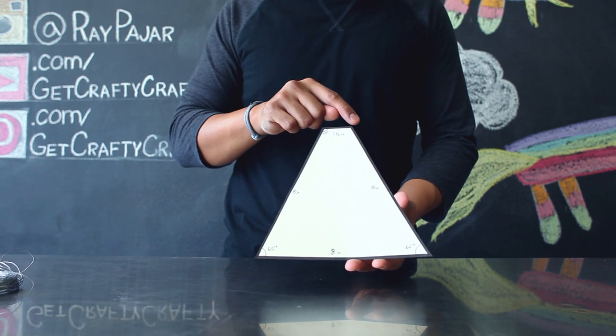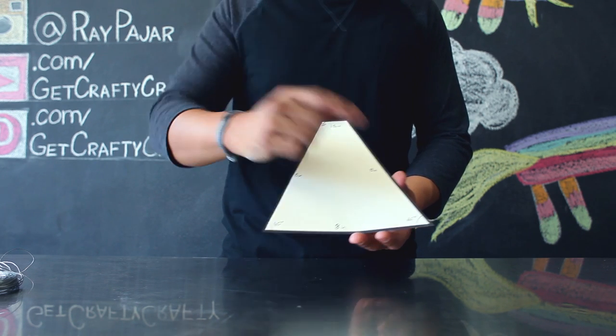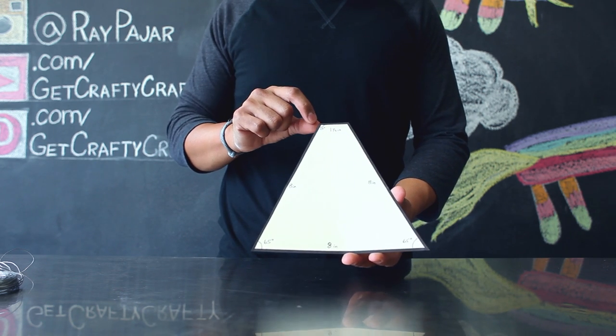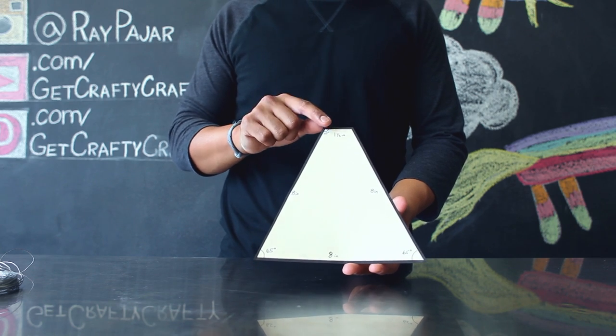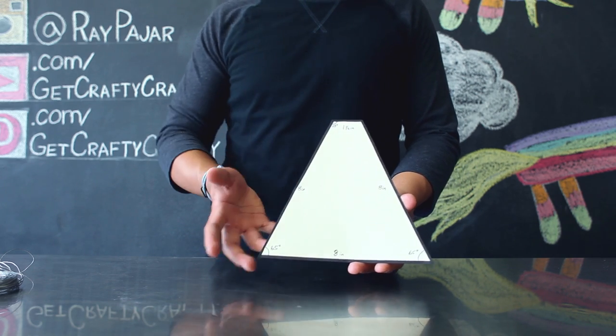An inch and a half at the top, 8 inches on the other side, and then 150 degrees on the top corners. Go ahead and create this trapezoid template.